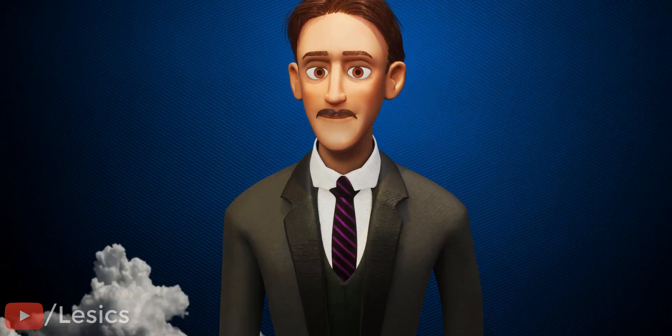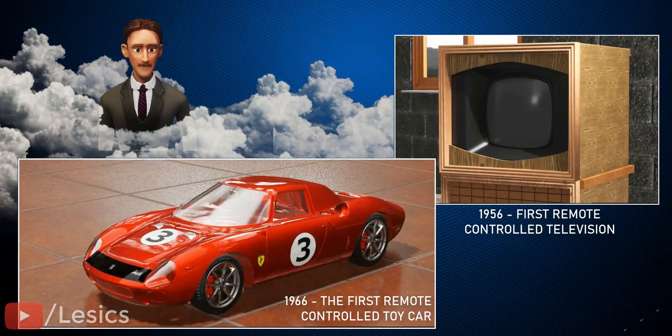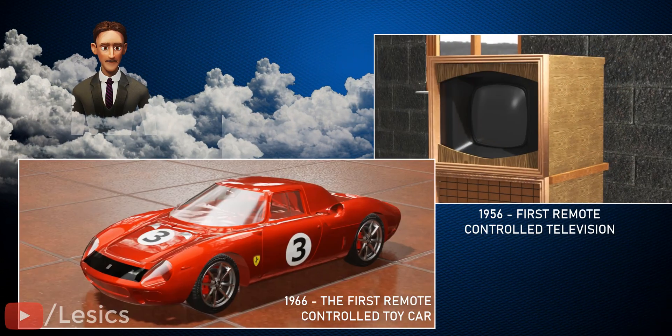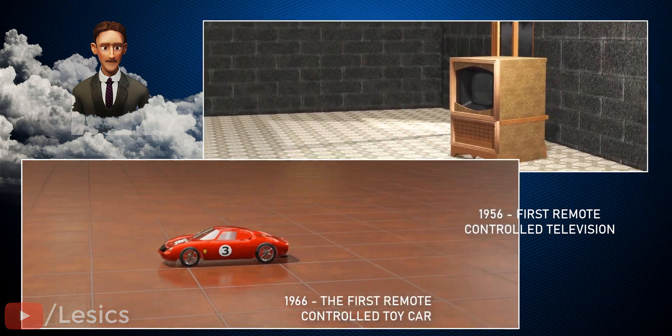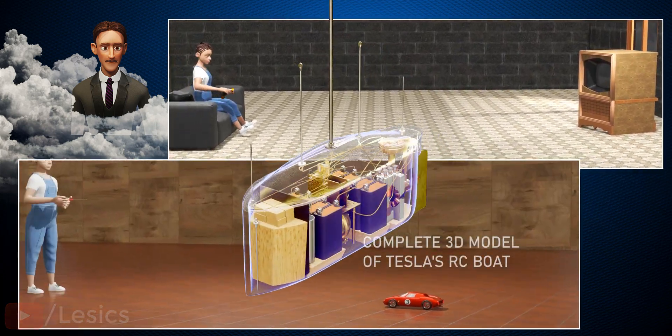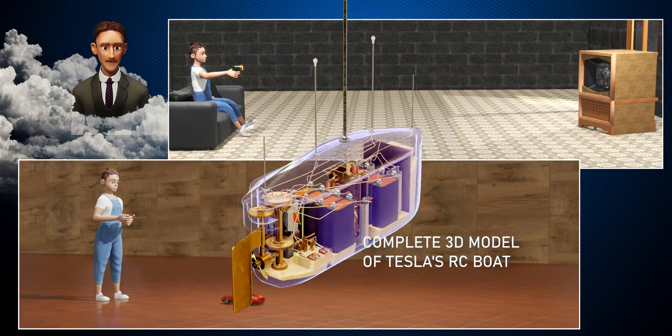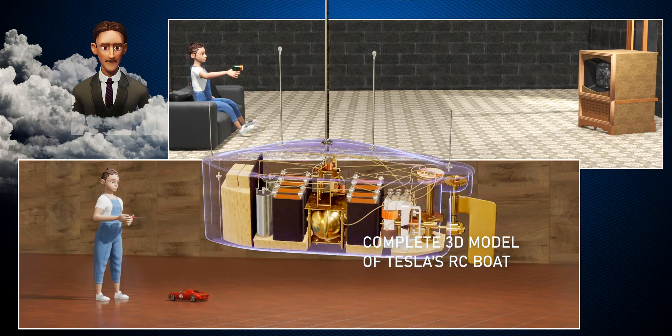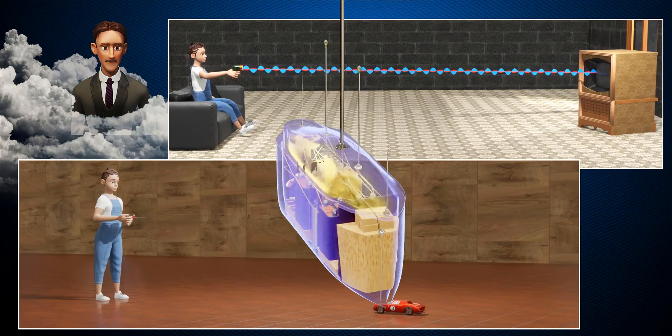It took more than 50 years after Tesla's demonstration for commercial remote-controlled television units or toy cars to hit the market. The reason? No investor took Nikola Tesla's RC boat technology seriously. Of course, Tesla's RC boat was way ahead of its time.